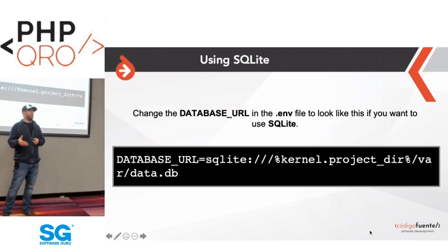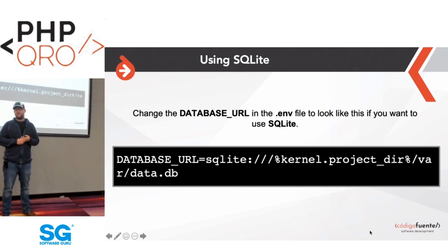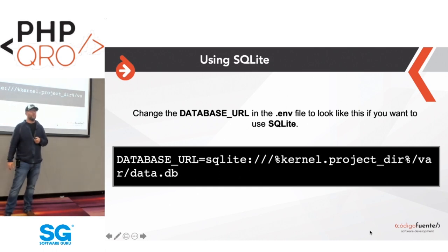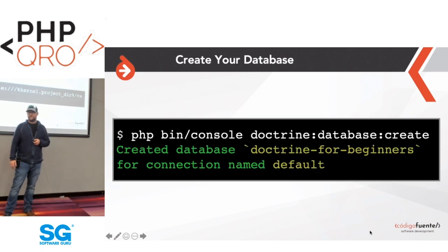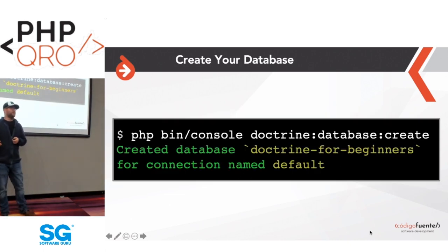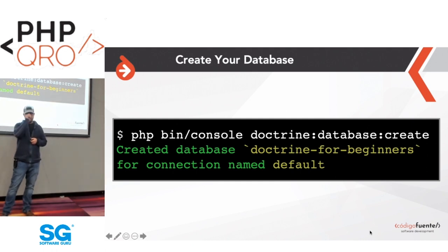In this example, we're going to use a database called SQLite. It's a single-file database — really great for testing things locally because it's easy to use and has very minimal requirements. To create your database, you can run the Doctrine database create command.